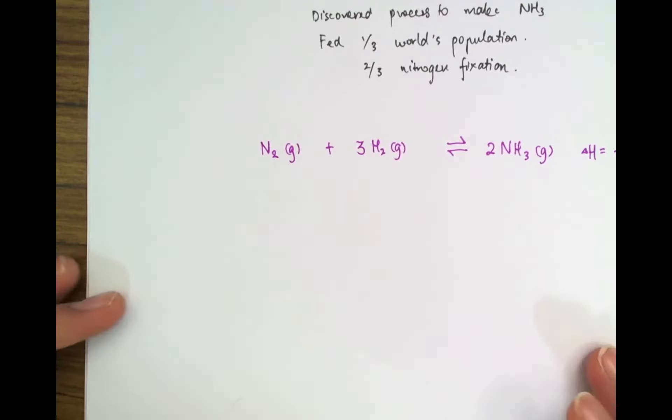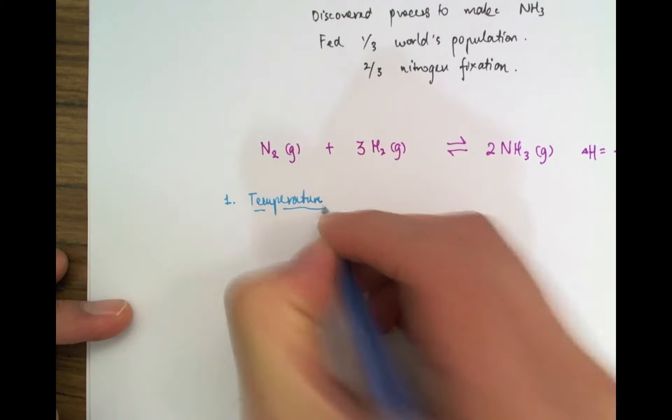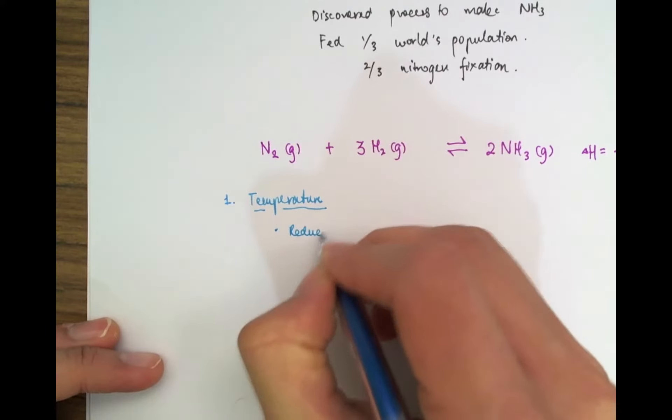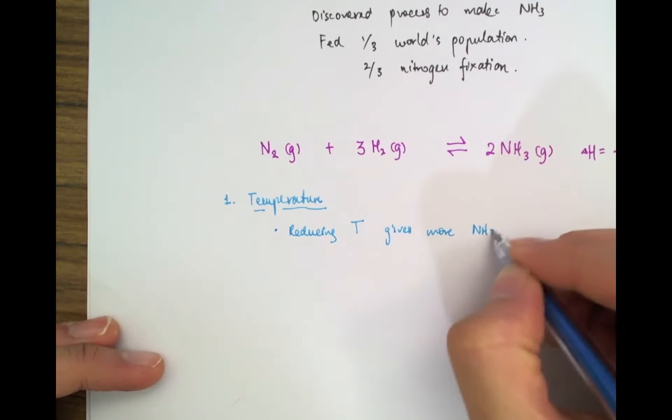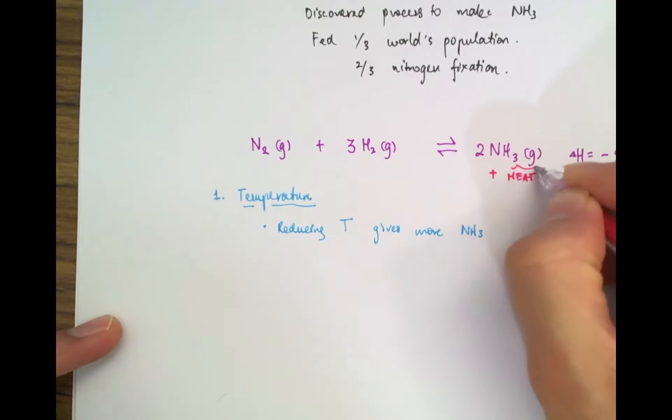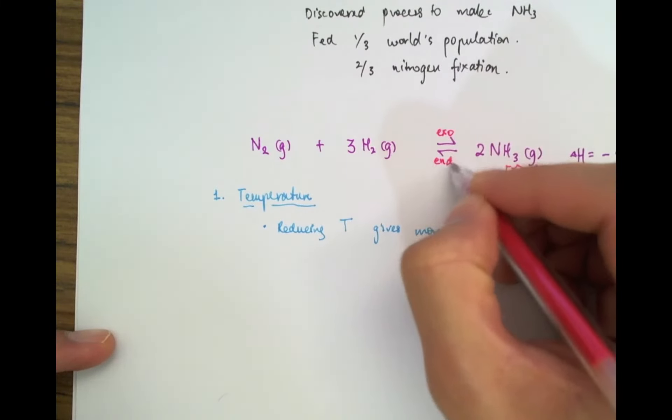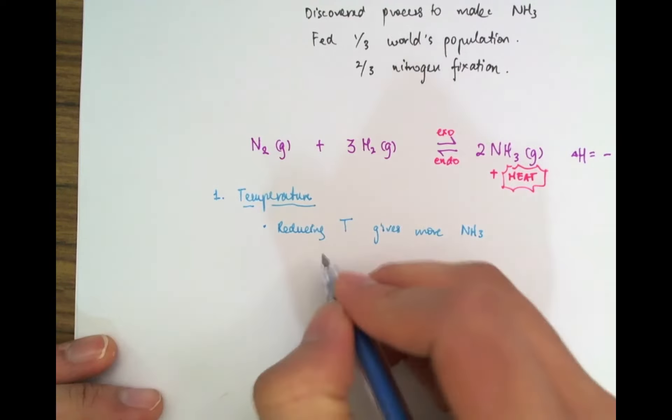This is an exothermic reaction so the enthalpy is negative 92 kilojoules per mole. So that's the Haber process basically. You take nitrogen, hydrogen and you form ammonia with it. So let's begin by taking a look at the effect of temperature on this reaction. Now because the reaction is exothermic, then reducing the temperature actually yields more ammonia.